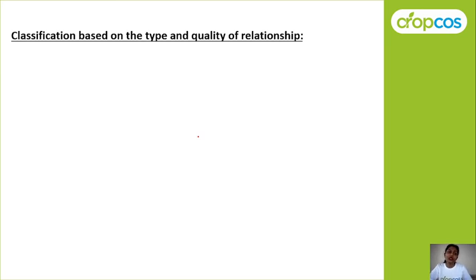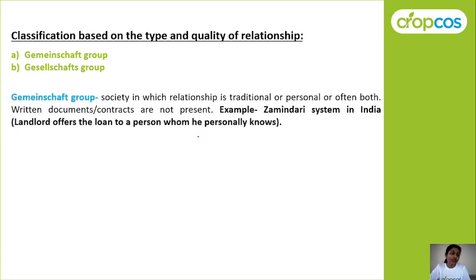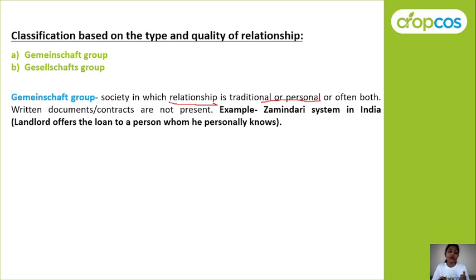Next is classification based on the type and quality of relationship. We have Gemeinschaft group and Gesellschaft group. In a Gemeinschaft group, the society has a traditional and personal relationship — members know each other. Written documents or contracts are not present; there is some kind of trust. The example is the Zamindari system in India.